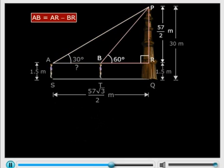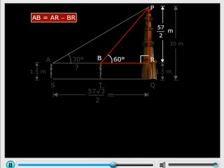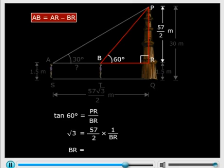Now let's look at the other triangle. Here we will try to find BR. Once again, tan 60°, what is that? PR by BR. So BR is 19 root 3 by 2 meters.